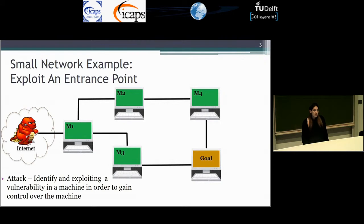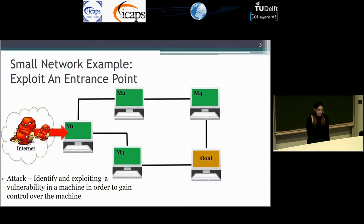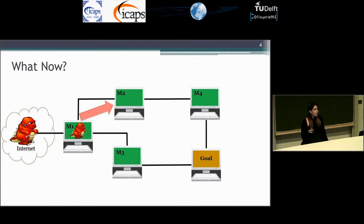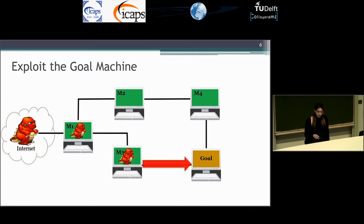So this is a small example. We have five machines and the attacker controls the internet. He wants to control the goal machine, which can be the database, for example, and the attacker has only one connection to the network, M1. So we will start by exploiting M1 and if the attack succeeds, he gains control over M1. Now we have two choices. We can try to exploit a vulnerability on M2 or on M3. In case we try to exploit M2 and the attack fails, he will try to attack M3. If the attack succeeds, he gains control over M3 and now we can attack the goal machine through M3, achieving the goal and ending the plan.